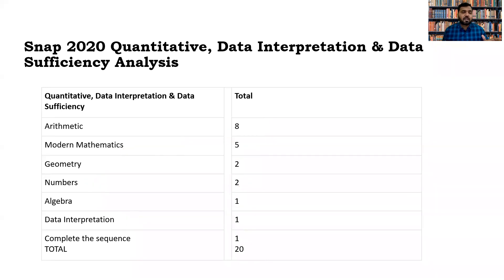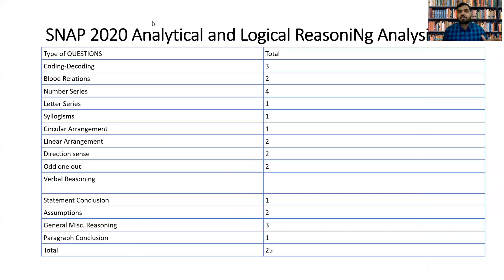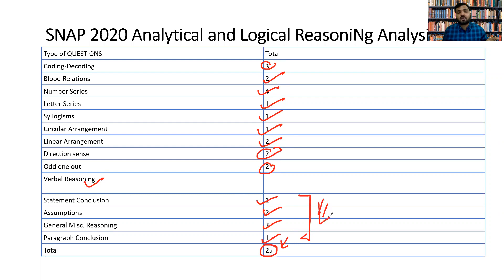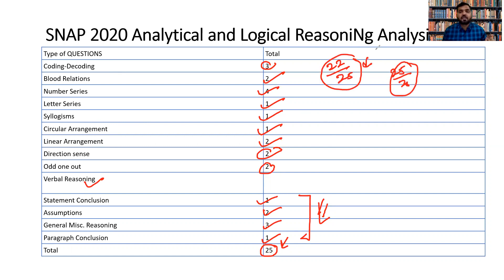For Logical Reasoning, the topics from SNAP 2020: 3 questions of Coding-Decoding, 2 of Blood Relation, 4 of Number Series, 1 Letter Series, 1 Clock, 1 Circular Arrangement, 2 Linear Arrangement, 2 Direction Sense, 2 Odd One Out, and Verbal Reasoning including 1 Statement-Conclusion, 2 Assumption, 3 General Miscellaneous Reasoning, and 1 Paragraph Conclusion — 25 questions total. Target 22 out of 25; if you can do 25 out of 25, that's great.